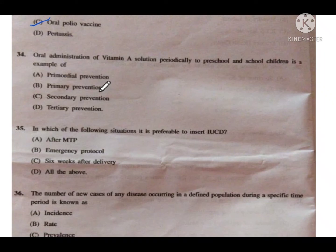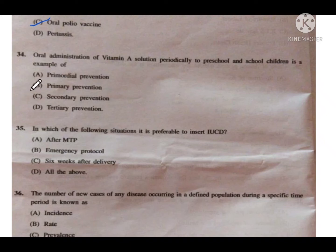Question number 34: Oral administration of vitamin A solution periodically to pre-schoolers and school children is an example of — option A is primordial prevention, B is primary prevention, C is secondary prevention, and D is tertiary prevention. Option B — primary prevention — is the correct answer. Vaccination, immunization, and vitamin A supplementation are all examples of primary prevention.